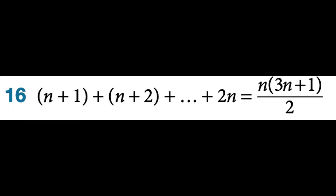Hi everyone. In this video I'm going to revisit the question from the prior video, where we proved that (n+1) + (n+2) + ... + 2n equals n(3n+1)/2. In that video the technique used was based on rules around arithmetic progressions. Since then, the student who sent through the question clarified that it's being asked in the context of induction, so I'm going to show how to prove the result using the steps of induction.